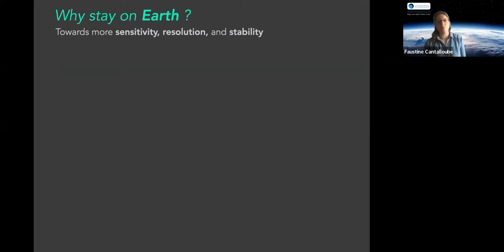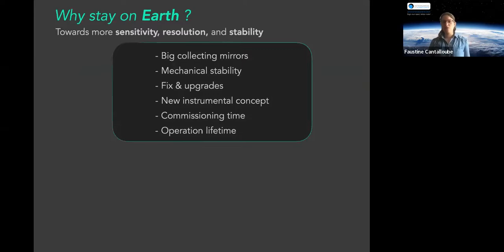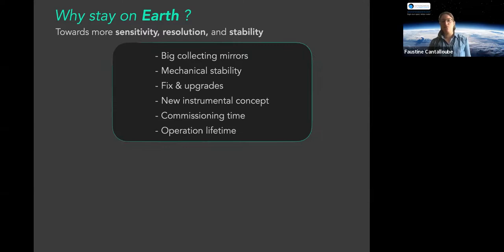Why do we stay on Earth? We want more sensitivity to look at faint objects, more resolution to see the sharpness of each object, and stability that we can't really have in space. We want big collecting mirrors, extreme mechanical stability, and the ability to fix and upgrade — unlike the Hubble Space Telescope where we had to send astronauts. Ground-based also lets us test new instrument concepts, since sending a telescope to space requires very robust, proven technology.